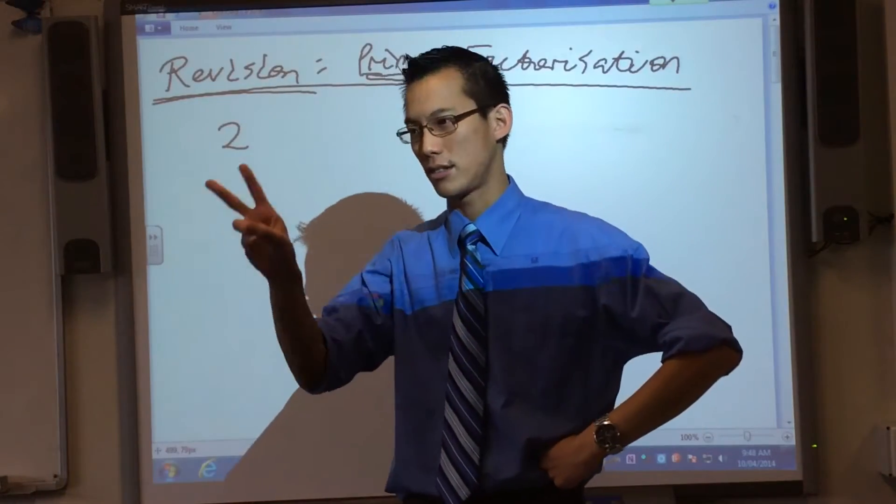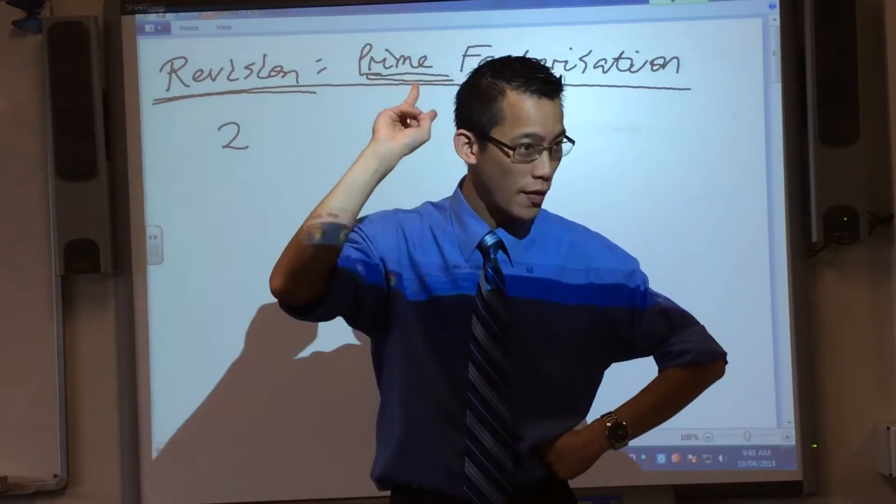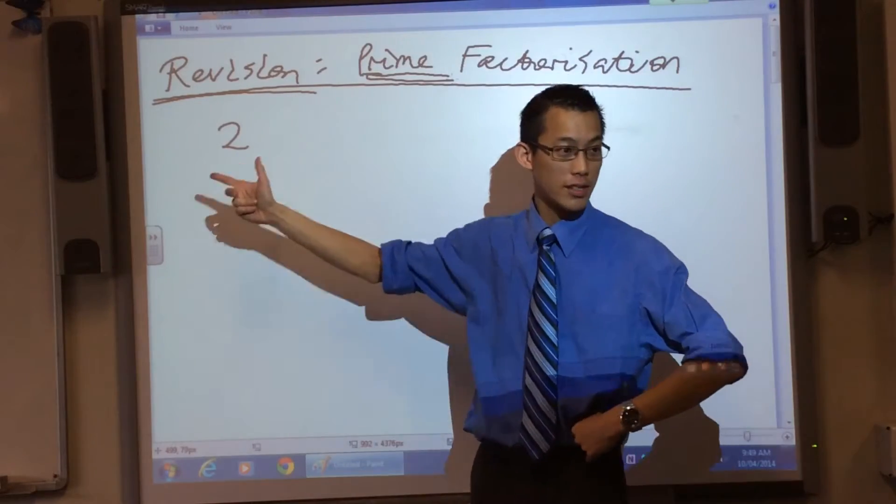They're the numbers which have exactly two factors. Two factors and two factors only. Okay, so therefore, after two, what's the next one?